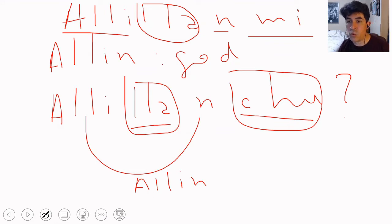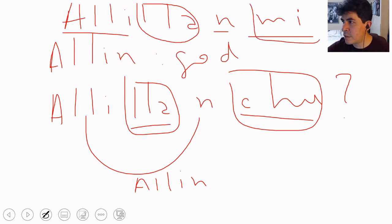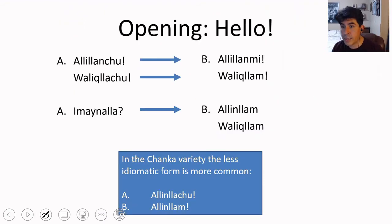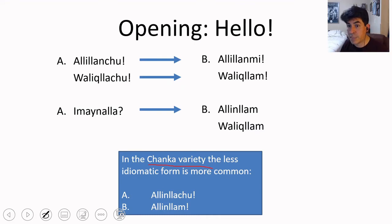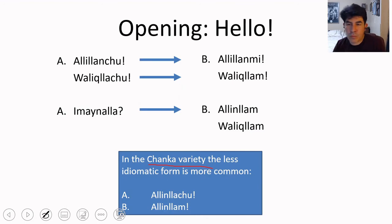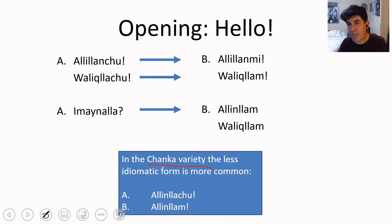Aliliangmi — the answer to Alilianchu — means 'just fine.' We'll talk about the contribution of the suffix mi later in this presentation. In contrast, the Chanka variety, one of the main varieties of Southern Quechua, does not use this idiomatic expression. They follow the regular pattern: Alilianchu is the question, and the answer is Aliliang. You can see that Aliliang has been respected — new suffixes are added in the regular position without breaking the stem.